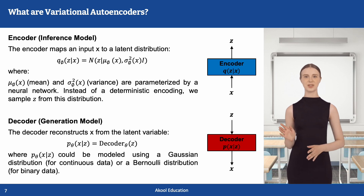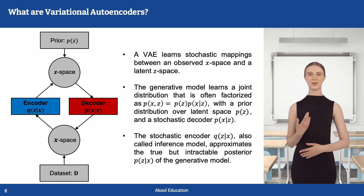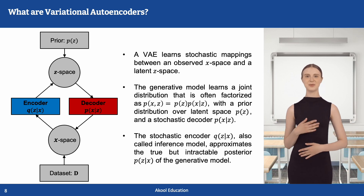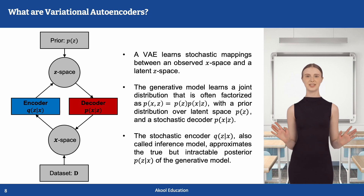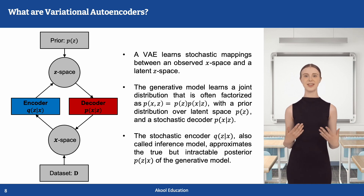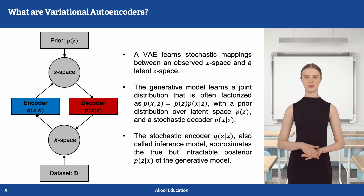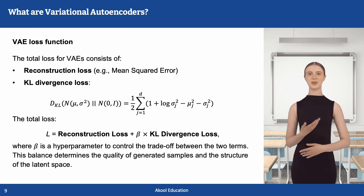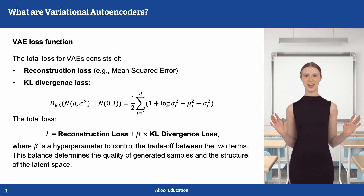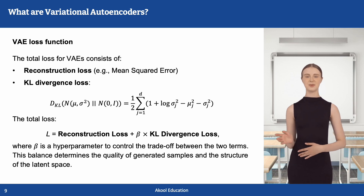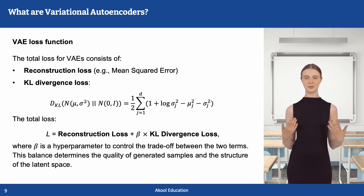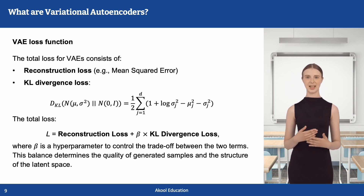The decoder, which serves as a generative model, reconstructs X from the latent variable Z. As illustrated in the figure on the left, a variational autoencoder learns stochastic mappings between an observed space and a latent Z space. The generative model learns a joint distribution of X and Z, factorized as a prior over latent space and a stochastic decoder. The stochastic encoder Q of Z given X approximates the true but intractable posterior P of Z given X. The total loss consists of a reconstruction loss (mean squared error) and a KL divergence between two Gaussian distributions, which has a closed form. A weight hyperparameter beta can be added to control the tradeoff between the two terms, balancing the quality of generated samples and the structure of the latent space.